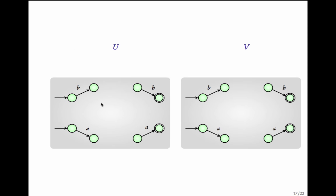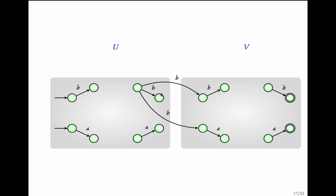In general, given the NFA for u and the NBA for V, you remove the initial designation from V's initial states and the accepting designation from u's accepting states. Then for every transition into an accepting state of u, add a transition that goes to the initial state of V. This gives one whole Büchi automaton for u·V.